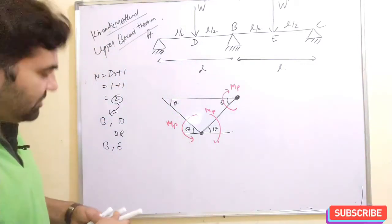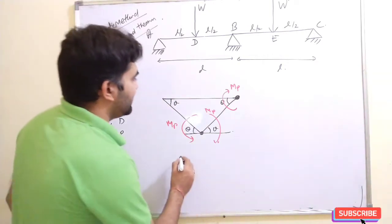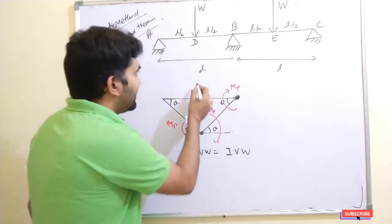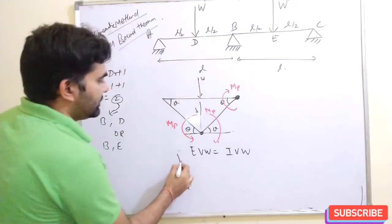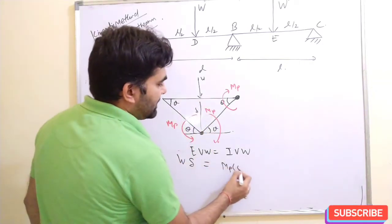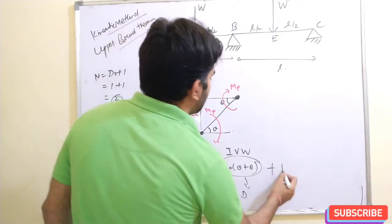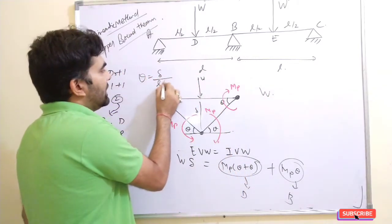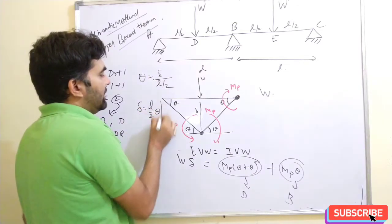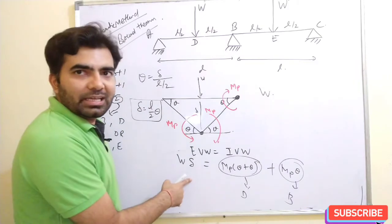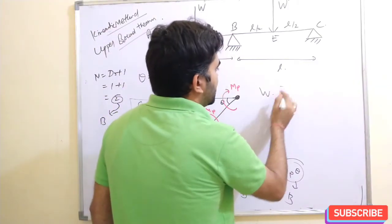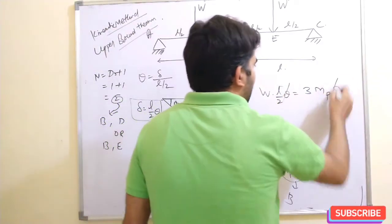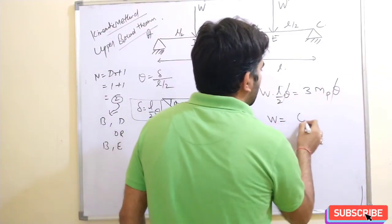Applying the principle of virtual work: external work done equals internal work done. External work done is W times delta, and internal work done is MP times theta at point D plus MP times theta at point B. Since angle equals arc divided by radius, delta equals L by 2 times theta. Substituting: W times L by 2 times theta equals 3 MP theta. Cancelling theta, W equals 6MP by L.